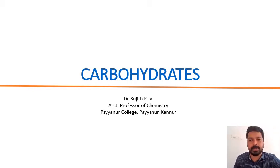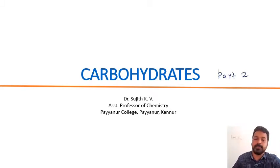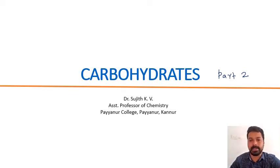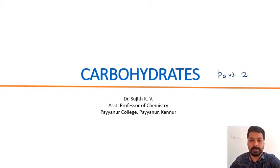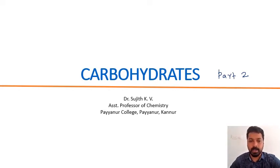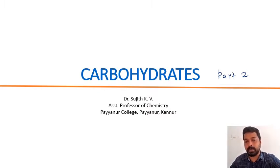Welcome to the second part of carbohydrates. In the first part, we learned what carbohydrates are, their classification into sugars and non-sugars. Sugars are further subdivided into monosaccharides and oligosaccharides. Monosaccharides include glucose and fructose. Glucose is dextrorotatory and is called dextrose, while fructose is levorotatory and is called levulose.